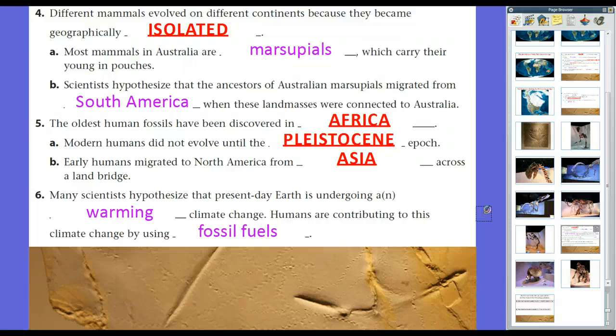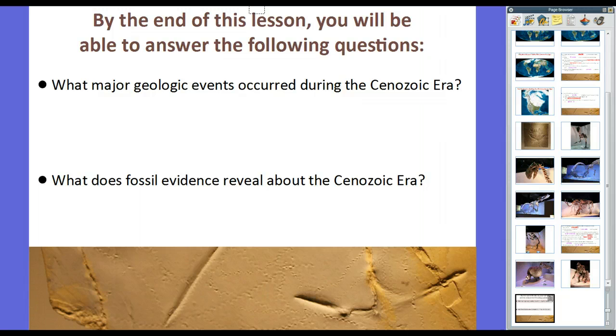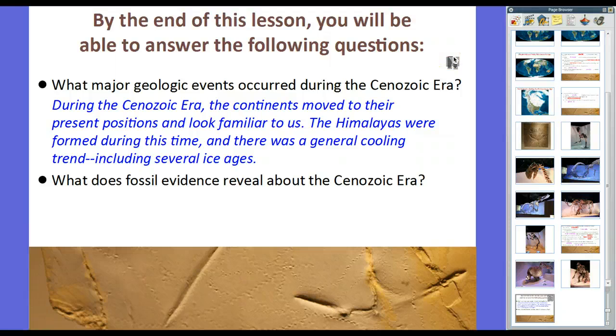So, we've just traveled over the past four lessons from 4.5 billion years ago to 2012. By the end of this lesson, you should have been able to answer the following questions. What major geologic events occurred during the Cenozoic Era? Well, during the Cenozoic Era, continents moved to their present positions.